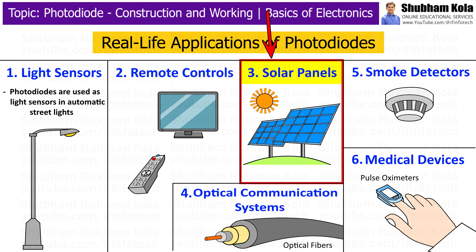The third application is solar panels. Solar panels are made up of many photodiodes. These photodiodes convert sunlight directly into electricity. When sunlight hits the solar panel, the photodiodes inside generate a current, which is then used to power electrical devices or stored in batteries for later use.